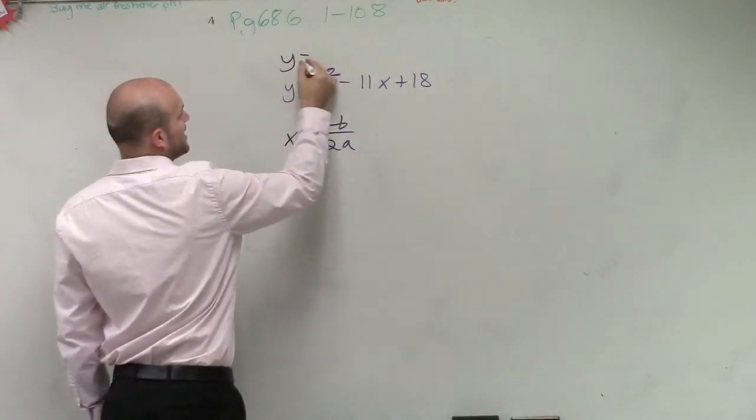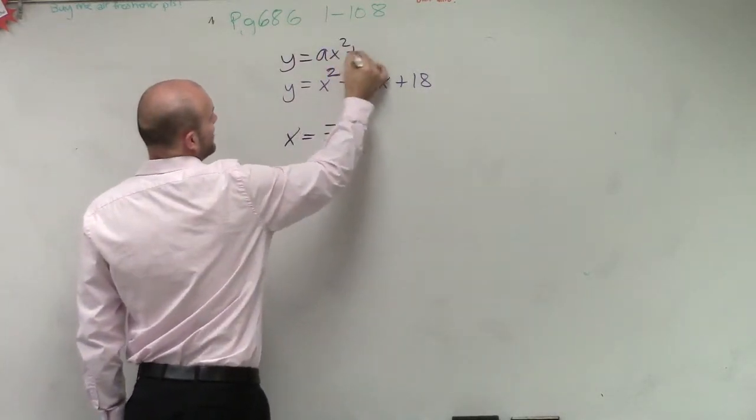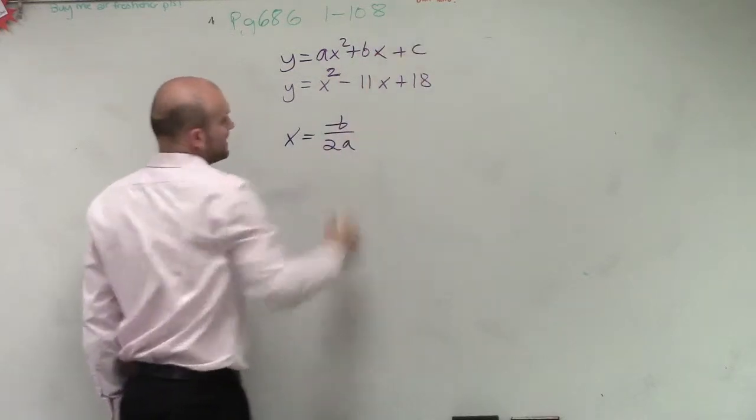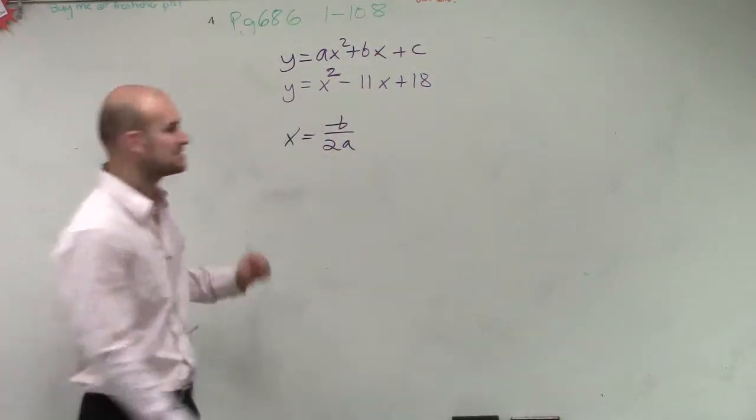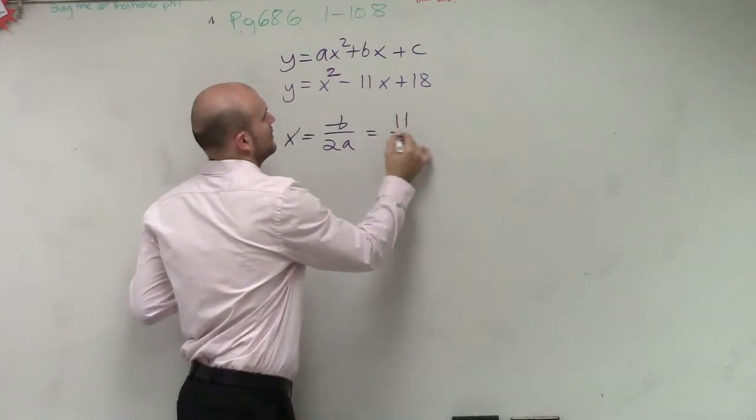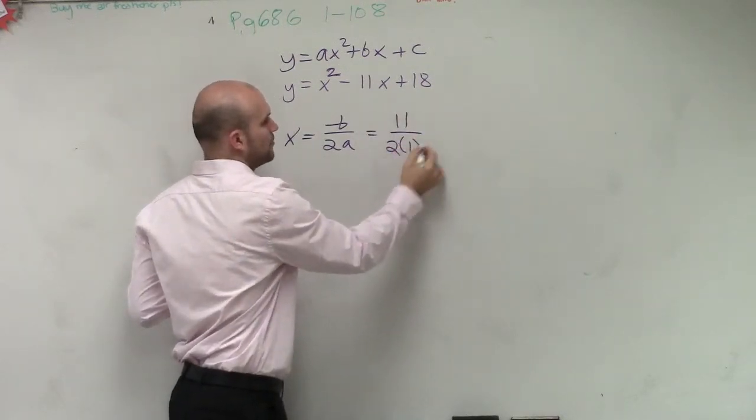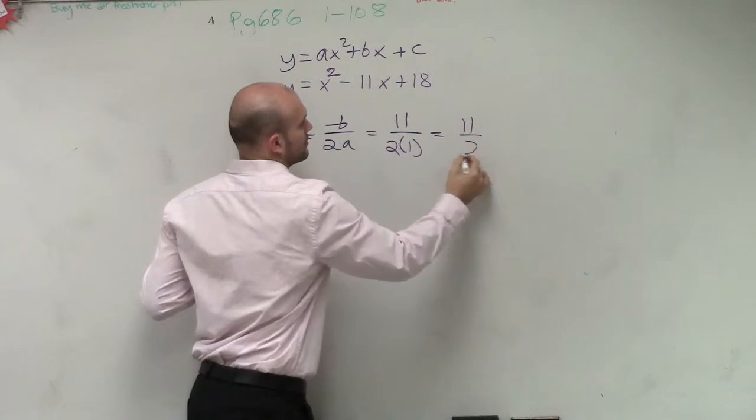Now remember, when it's in this general form, we have y equals ax squared plus bx plus c. So opposite of b is going to be positive 11 divided by 2 times a, which is 1, which equals 11 halves.